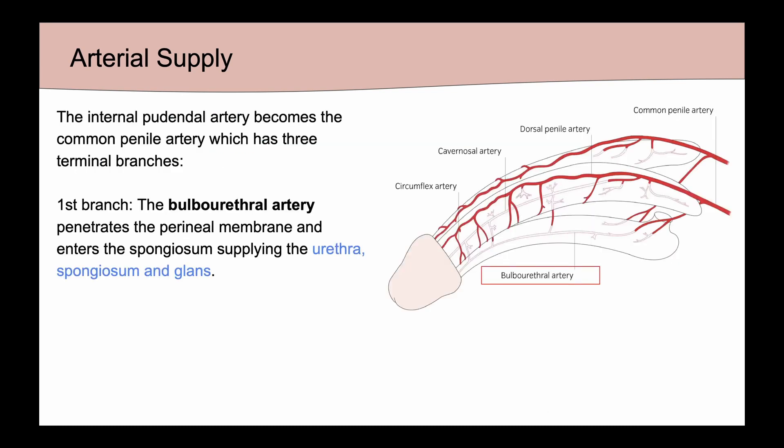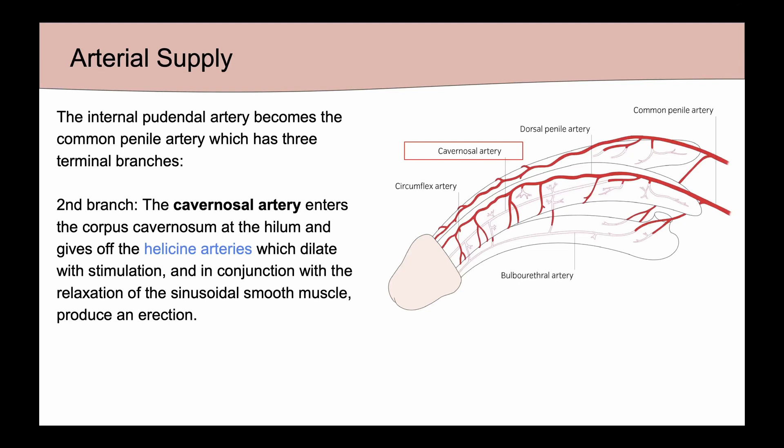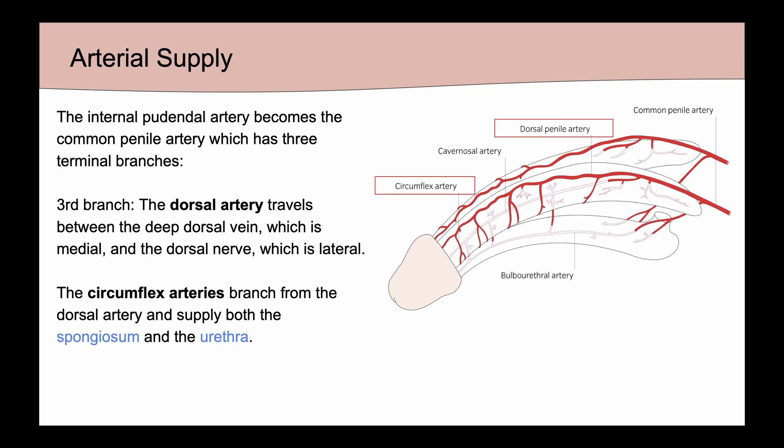The common penile artery has three terminal branches. The first branch is the bulbourethral artery, which penetrates the perineal membrane, enters the spongiosum, and supplies blood to the urethra, spongiosum, and glans. The second branch is the cavernosal artery, which enters the corpora cavernosum at the hilum and gives off the helicine arteries, which dilate with stimulation and in conjunction with relaxation of smooth muscle produce an erection.